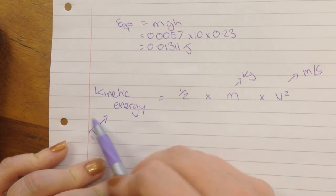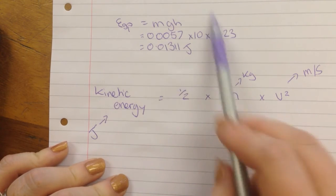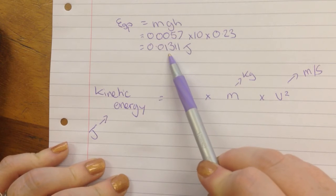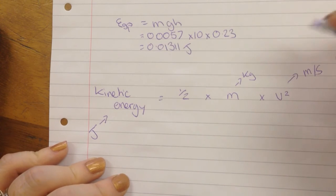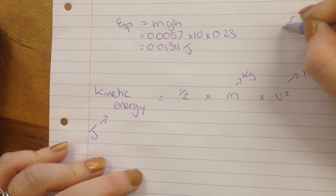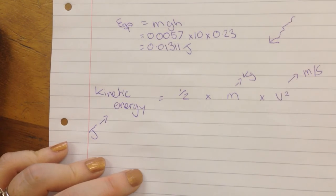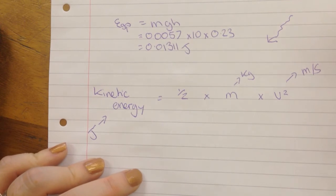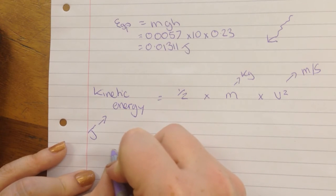So we know how much kinetic energy they have. Because it's going to be the same number as the gravitational potential energy. Once they got to the top they had the maximum amount of gravitational potential energy. And once they started falling down, that's when the gravitational potential energy turned into kinetic energy. So we know that number.